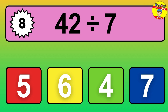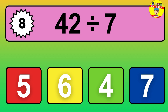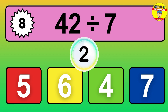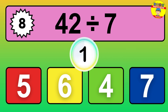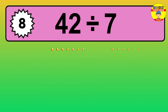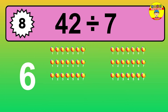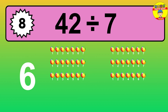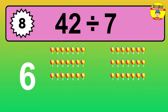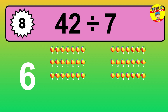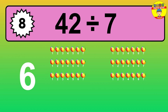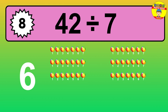42 divided by 7 — time to think! Let's go to the solution. Divide the number 42 by 7. Each group contains 7 units, so dividing 42 by 7 results in 6 equal groups. Thus, the result is 42 divided by 7 equals 6.